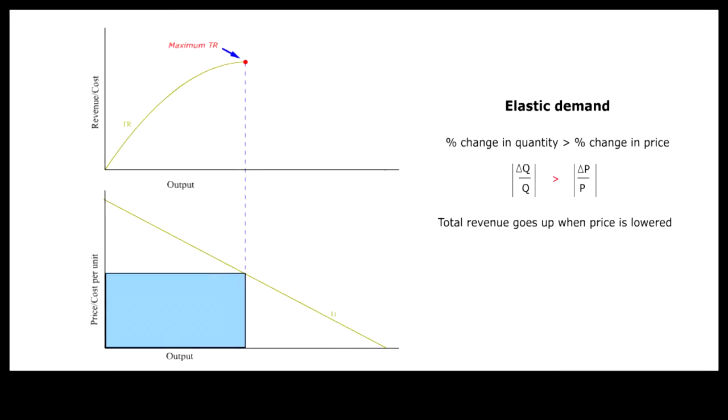When demand is price elastic, that is when the percentage change in quantity demanded is larger than the percentage change in price, lowering price will generate larger total revenue. In a straight line downward sloping demand curve, the midpoint locates the price that maximizes total revenue.